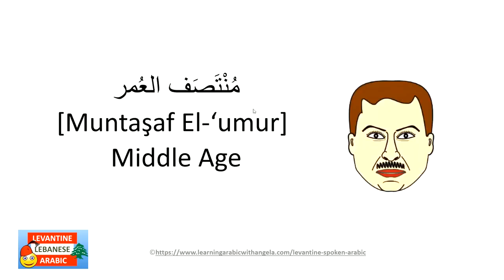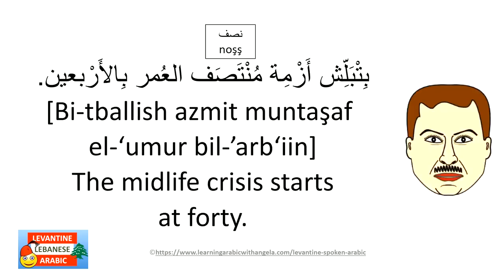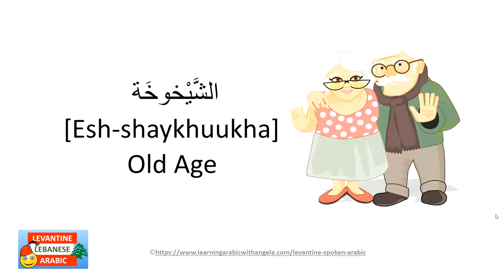Middle age: muntasaf al-omr. Muntasaf means halfway or half; we also say nus for half, as in 'sa'a tlati w nus' — half past three. The midlife crisis — azmet muntasaf al-omr — starts at around forty. Old age is al-shaykhoukha.